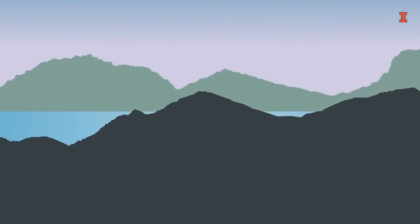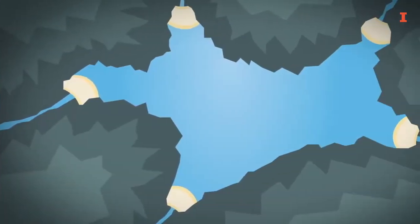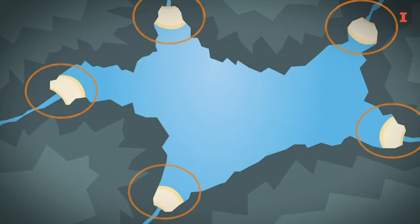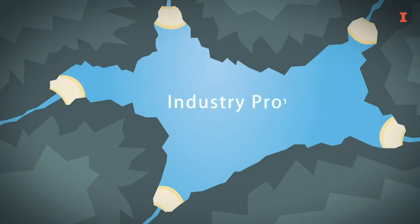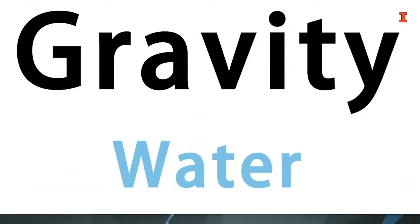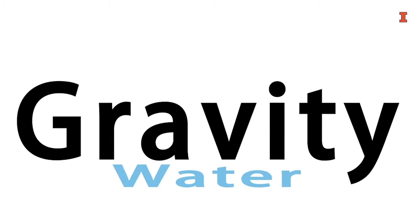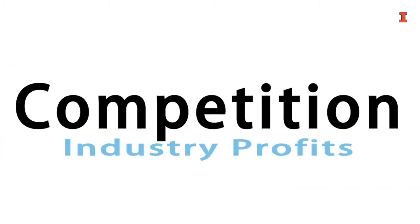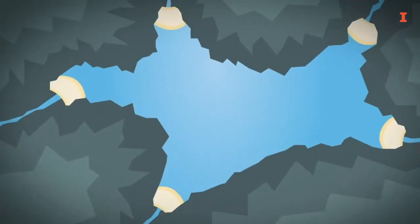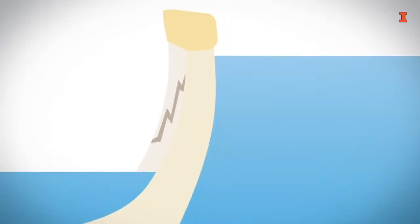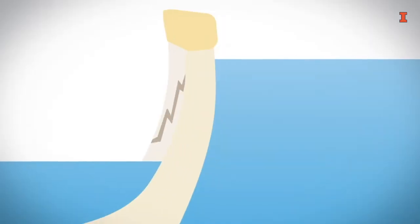Imagine I'm hiking high up on a mountain and come across a lake. The water in this lake is being held in place by five dams. What determines the amount of water being held in this lake? Think of these five dams as the five forces, and of the water in the lake as industry profits. Just as gravity is acting on the water to try and make it go downhill, the forces of competition are constantly acting on industries to drain away their profits. What is keeping the water and profits in place are the barriers to these forces. So if any one of the dams was weak and broke down, all the water from the lake would drain away through that breach.